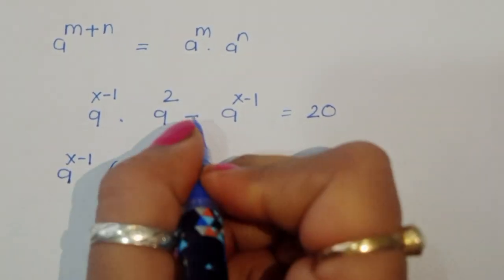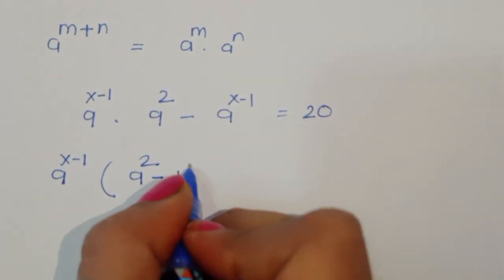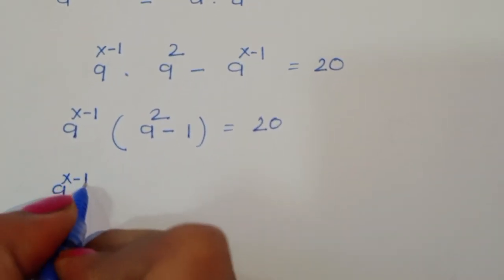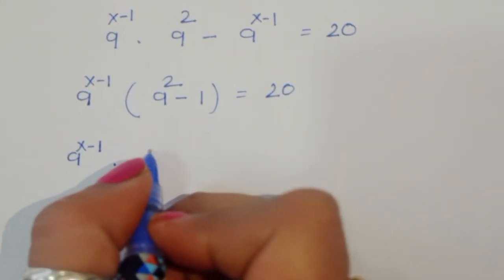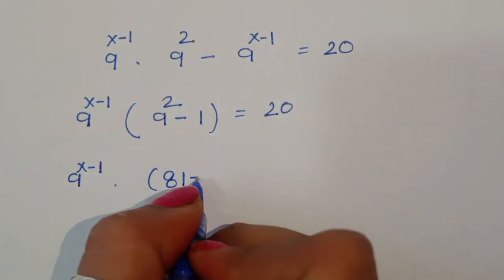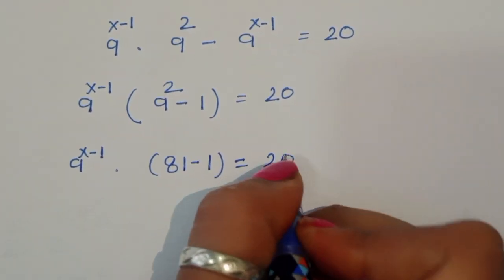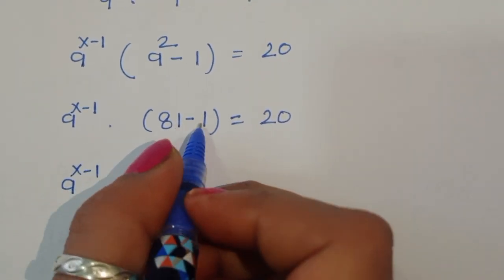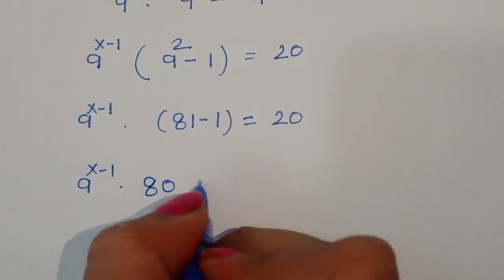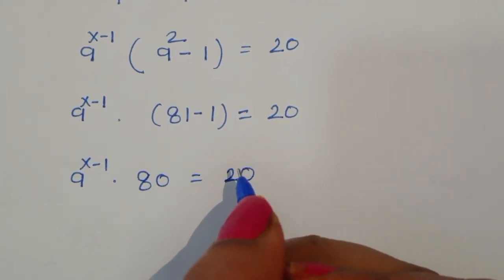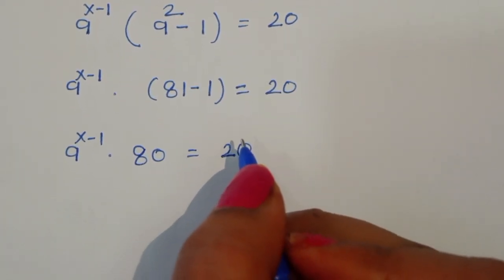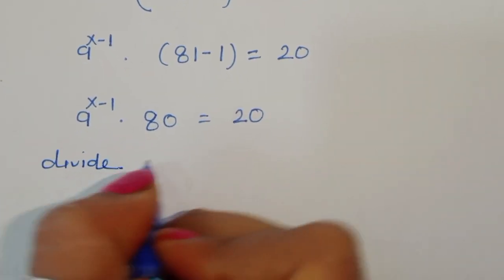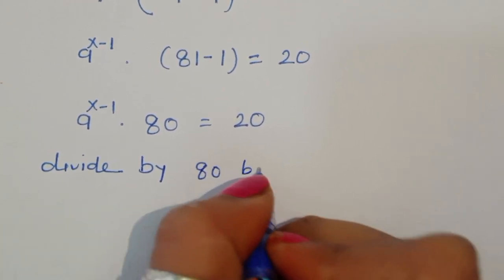Taking 9 power (x-1) as common, we get 9 power (x-1) times (9 squared minus 1) equals 20, which gives 9 power (x-1) times (81 minus 1) equals 20, so 9 power (x-1) times 80 equals 20. Now we divide both sides by 80.